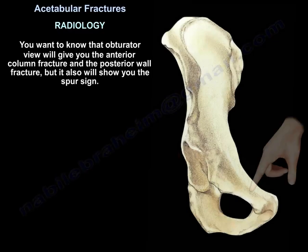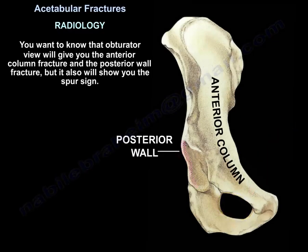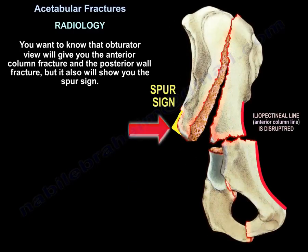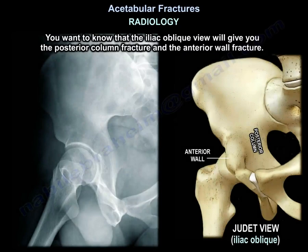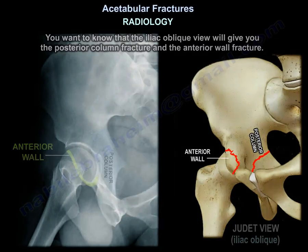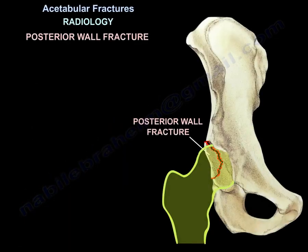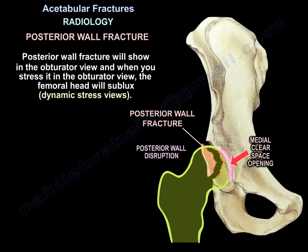The obturator view gives you the anterior column and the posterior wall, and will also show you the spur sign. The iliac view gives you the posterior column and the anterior wall. For example, the posterior wall will show in the obturator view, and when you stress it, the head will sublux in that view — these are the dynamic stress views.